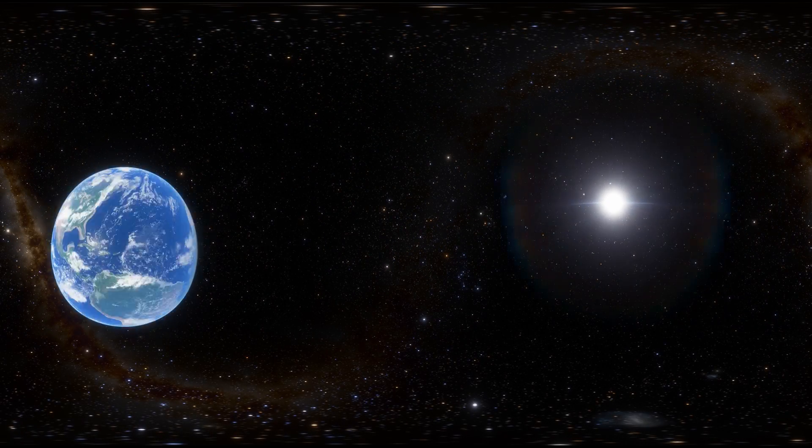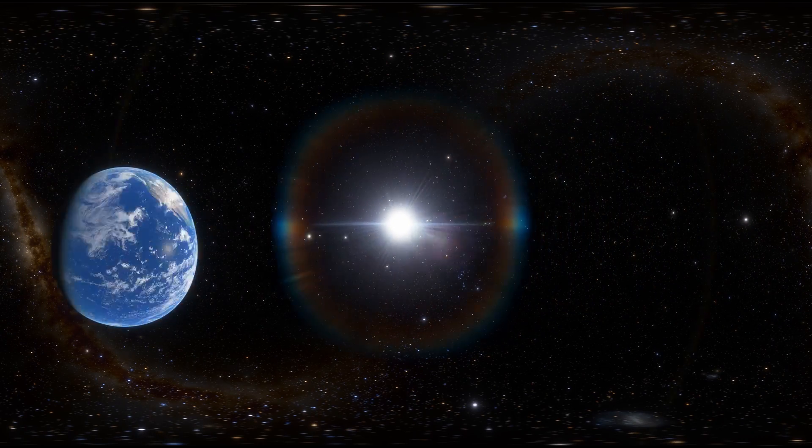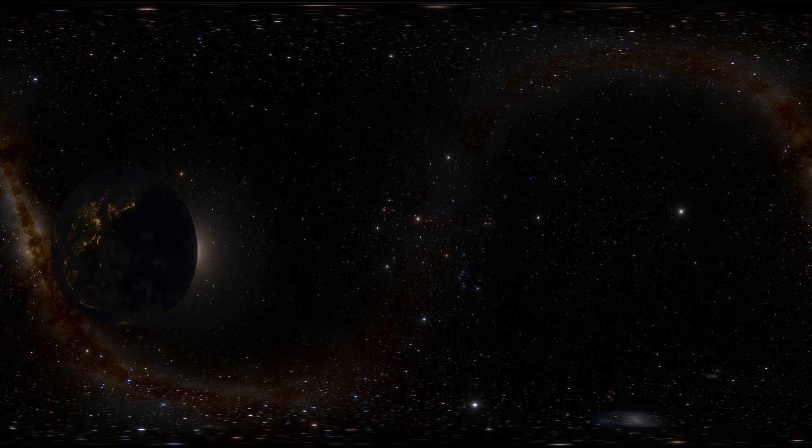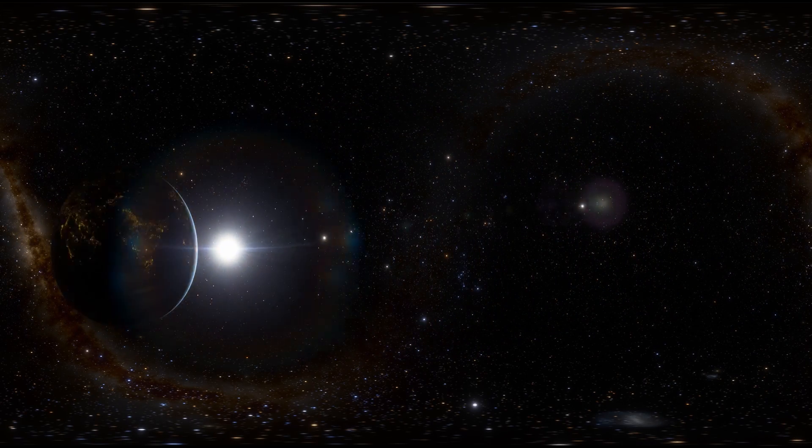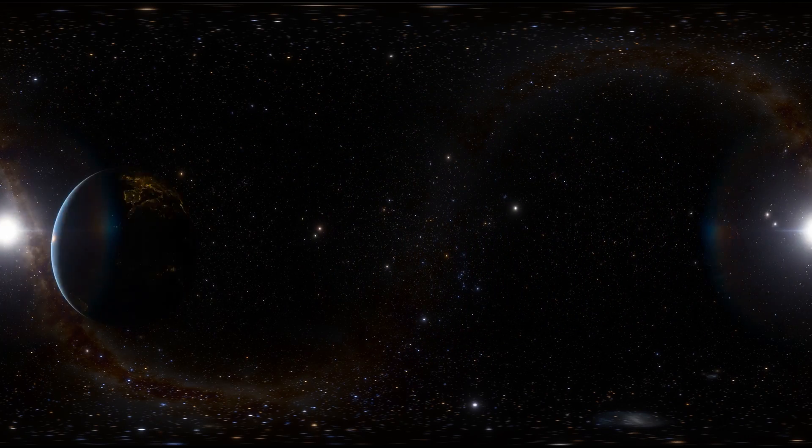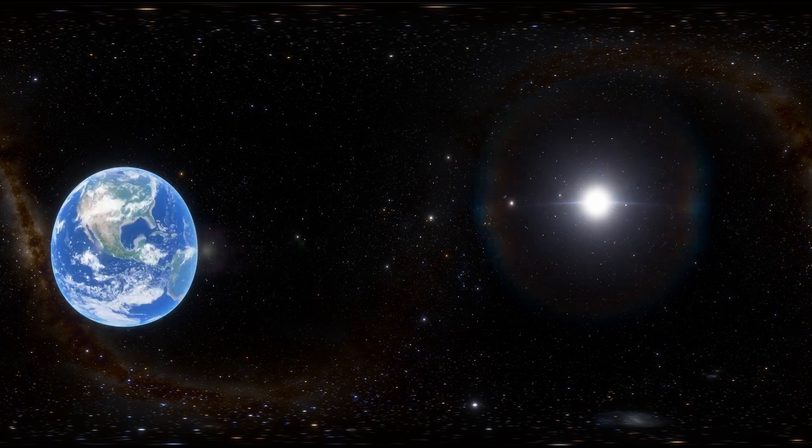We orbit a star in an area that we call the habitable zone, or the Goldilocks zone as some may call it. An area within our solar system that's perfectly distanced from the Sun—not too hot and not too cold, close enough to keep us warm and distant enough to keep us cool.